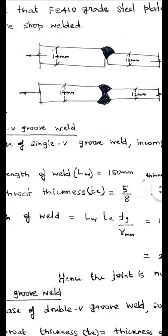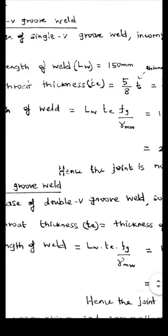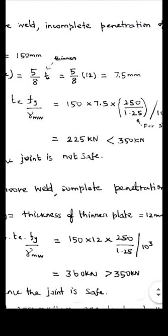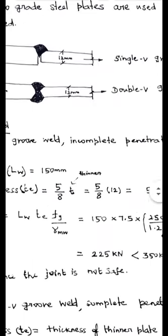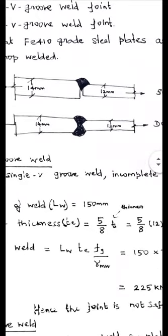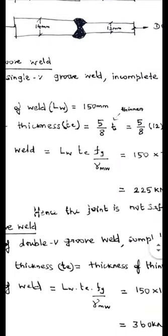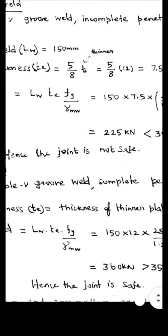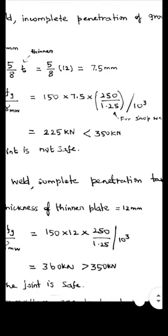What will happen? See the figure. It will cover full thickness of the member. Therefore effective throat thickness is equal to thickness of the thinner plate. Here the thickness of the thinner plate compared to 14 and 12 mm, 12 will be the thickness of the thinner plate. Therefore Te is equal to 12 mm.